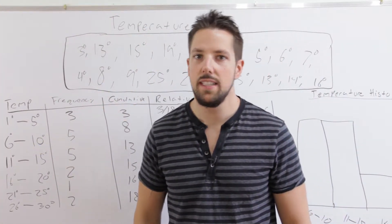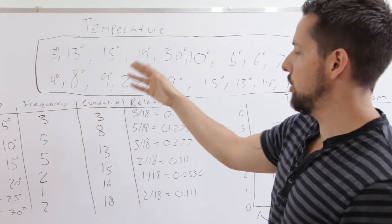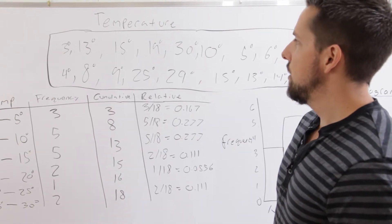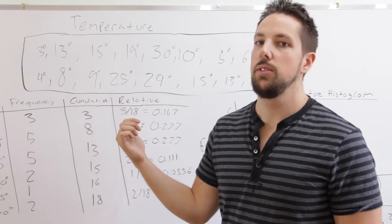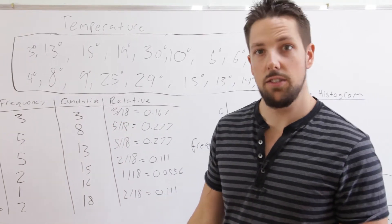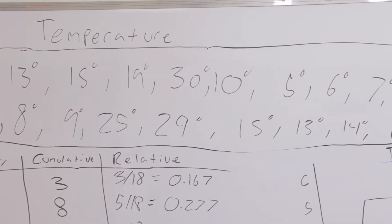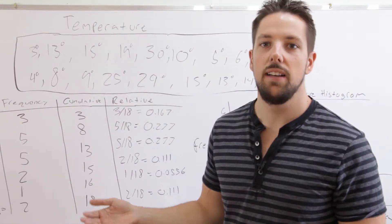We're going to do an example that brings it all together. Right here we have raw data showing the temperatures over a certain period of time. The first thing we ask is, what's the variable? Well in this case, the variable is temperature. Now we ask, is it discrete or is it continuous? Well temperature can take on an infinite number of values, so it's continuous. And that tells us that we're going to have to make a histogram.